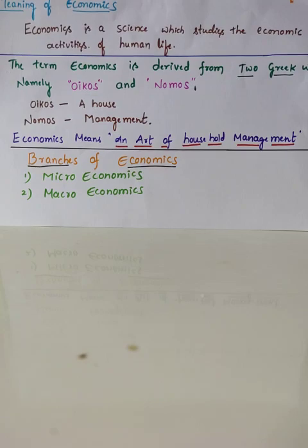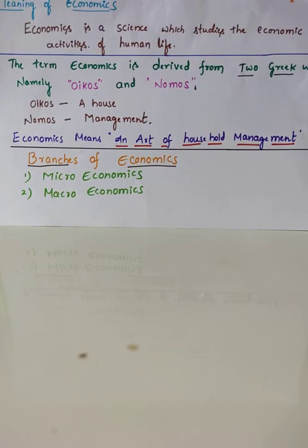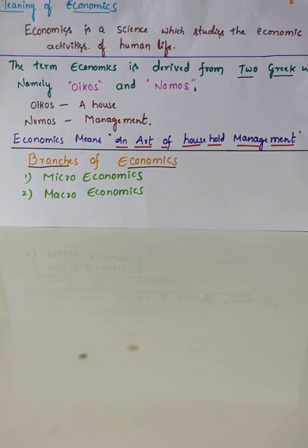First we should know the meaning of economics. Economics is a social science which studies the day-to-day economic activities of human life. Economic activities means what people are doing in everyday activities — that is producing, consuming, distributing, and exchanging. These are all called economic activities.